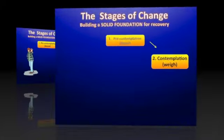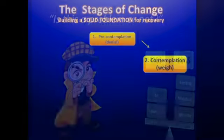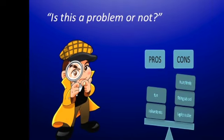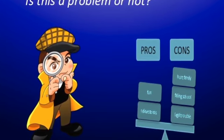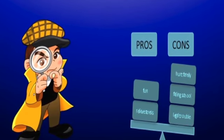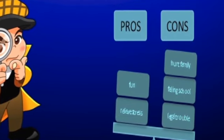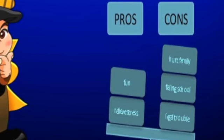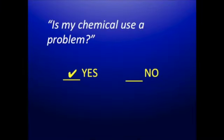The second stage is called the contemplation stage. We begin to take a look at this problem and weigh out whether we think it is a problem or not. We weigh the differences between the pros and cons of engaging in the behavior — the benefits versus the risks. We might look at where our chemical use got us versus where we want to be in various life areas. And eventually, if we arrive at the conclusion that yes, indeed, this is a problem that I should change...